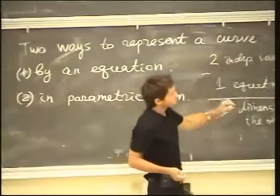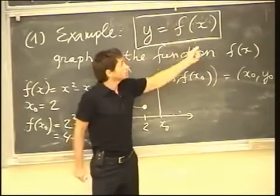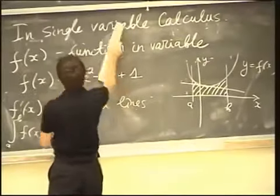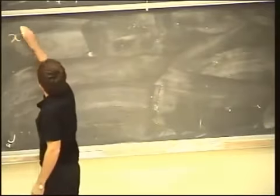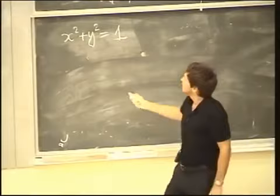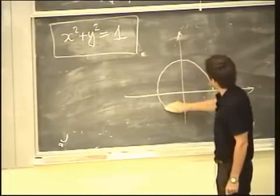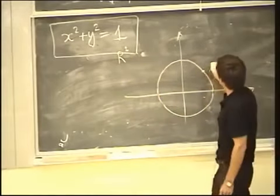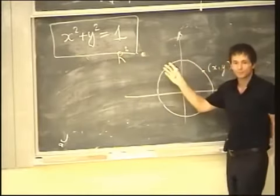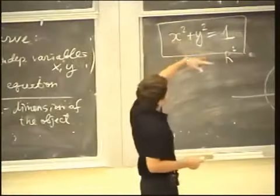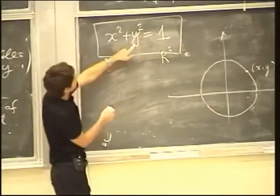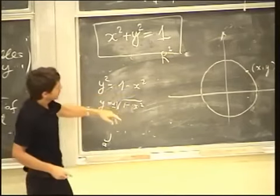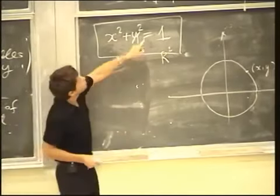Perhaps one more thing: not all equations look like y equals f(x). The simplest equation which is not like this is x squared plus y squared equals one. Do you know what this represents? A circle — that's right. This is one equation in two variables x and y, and the geometric object it represents is a circle of radius one. This equation represents a circle because if on the plane I look only at the points x, y which satisfy this equation, I get exactly this circle. You can try to express y in terms of x, but what you get is y squared equals one minus x squared, so you have to extract the square root — there are two square roots. My point is you can write equations more general than y equals f(x), and this way you get more general curves.